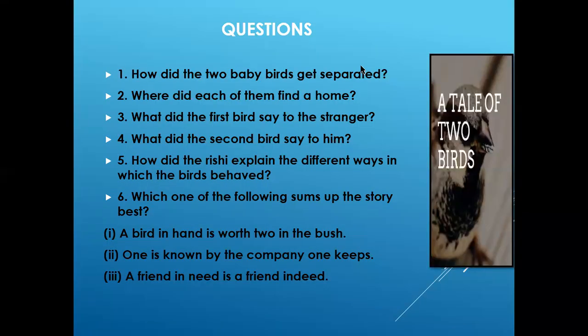The answer can be something like: the two baby birds lived with their mother in a nest in a tall and shady tree. One day there was a big storm with thunder, lightning and rain. A big heavy branch hit the nest and killed the mother bird. The strong wind blew the two baby birds away to the other side of the forest and separated them from each other. Your answer should first start with where they lived, then cover the storm, then the incident which killed the mother, and how the baby birds were blown away and got separated.